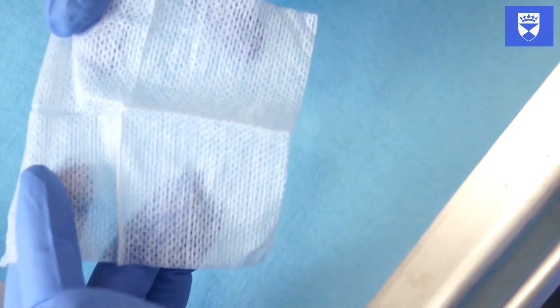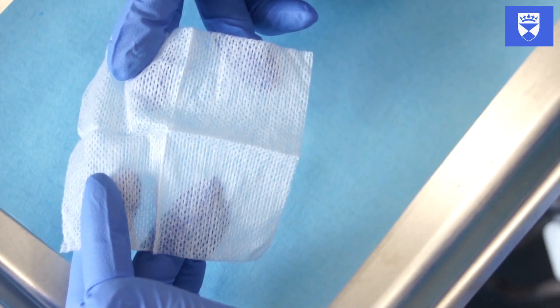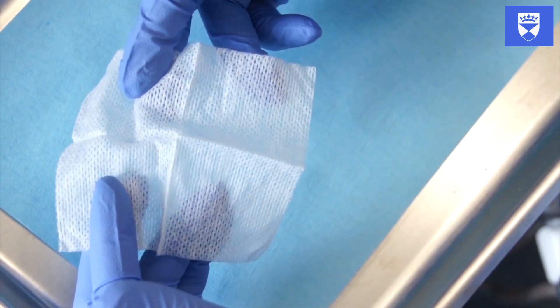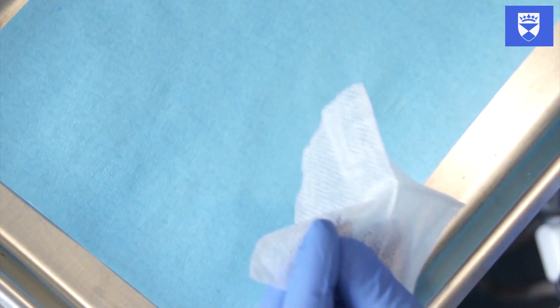Once you are happy with your crown selection, it is time to try the selected crown over the tooth. For this, the patient should be semi-recumbent or upright. It is imperative that the airway is protected to prevent aspiration of the crown. There are many methods to do this.